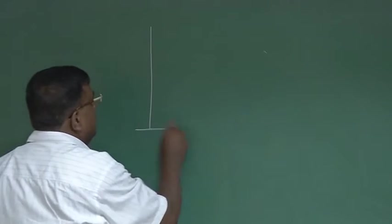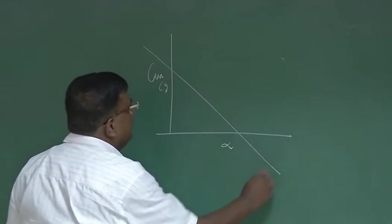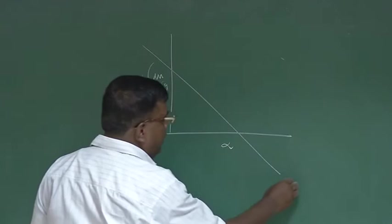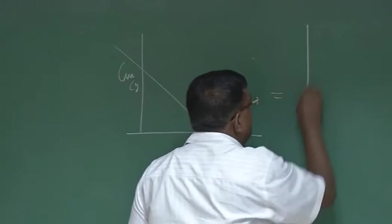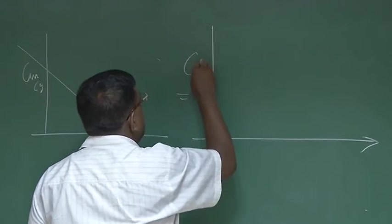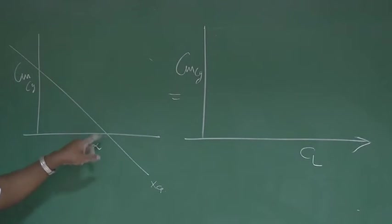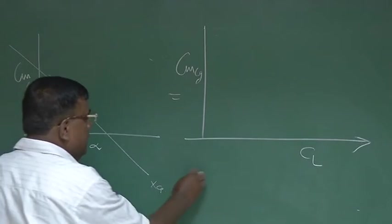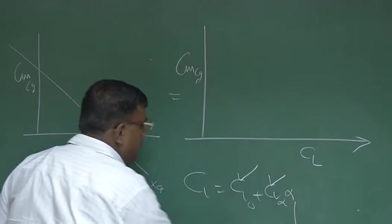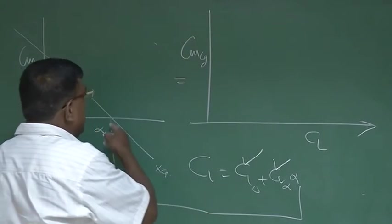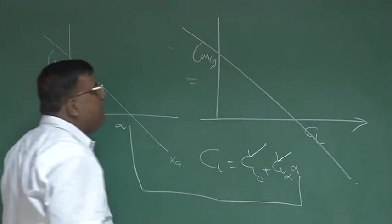So far we have been drawing CM-CG versus alpha. This is for a particular CG location. Now I can easily translate this into an equivalent graph of CM-CG versus CL, because if I know alpha, I know the corresponding CL, since CL is nothing but CL-naught plus CL-alpha times alpha. Once I know alpha, I know CL, so I can scale it up. The variation of CM and CL will remain like this.